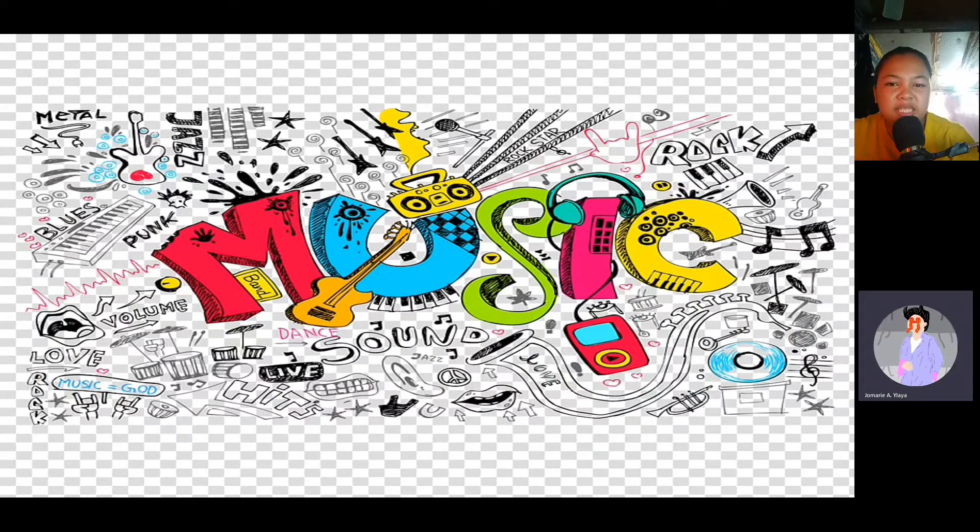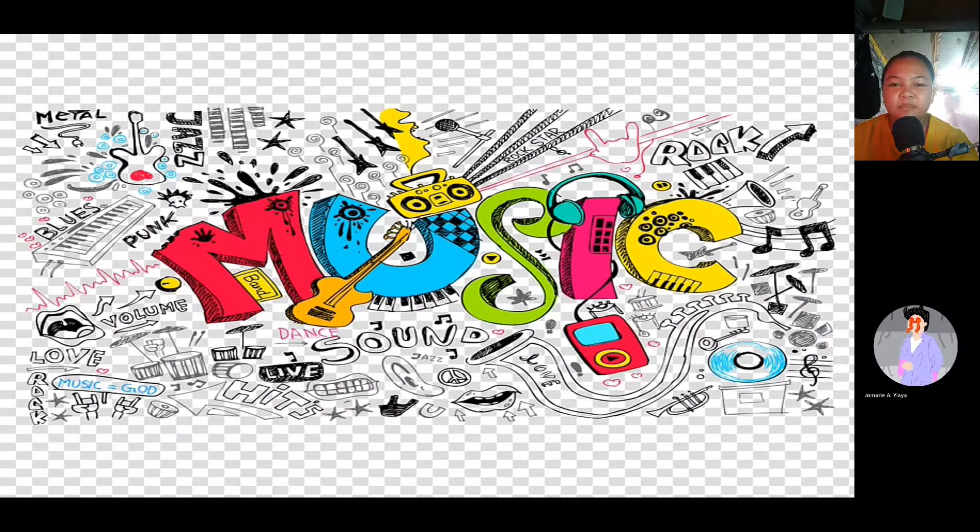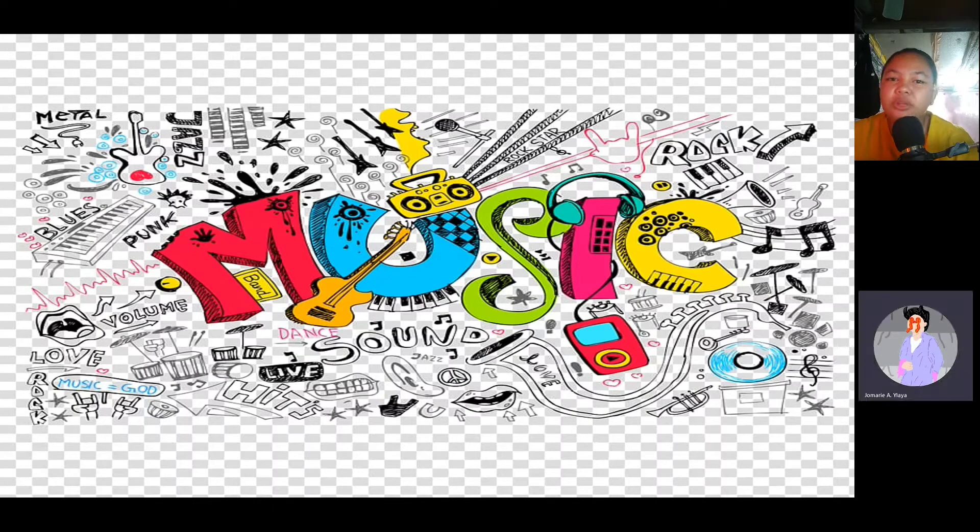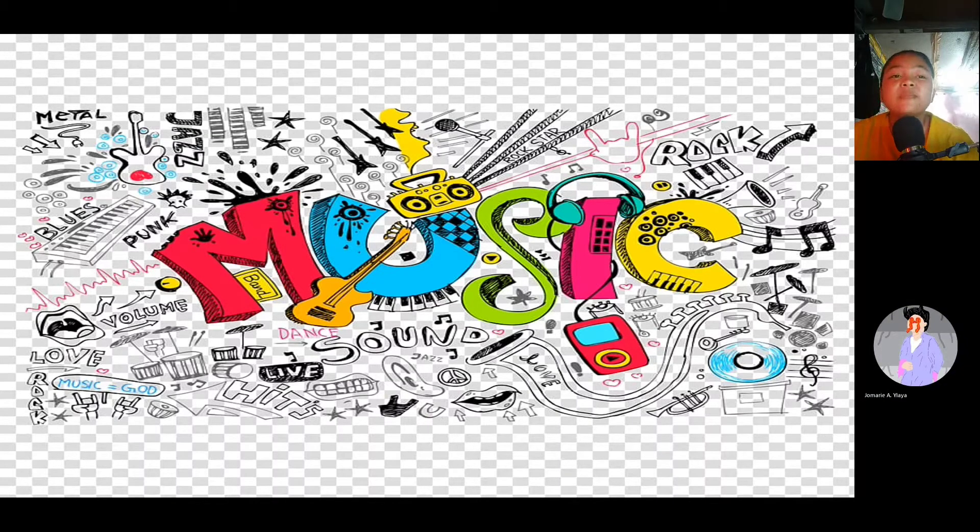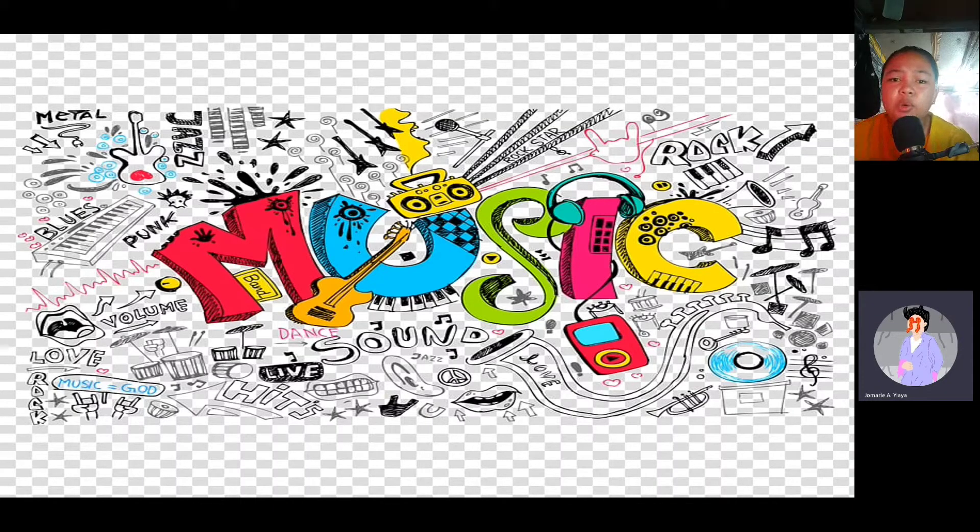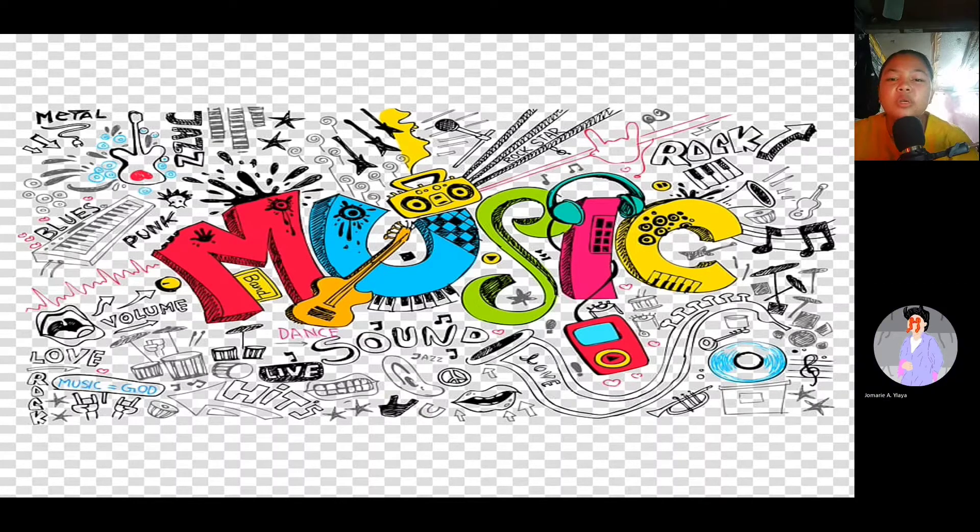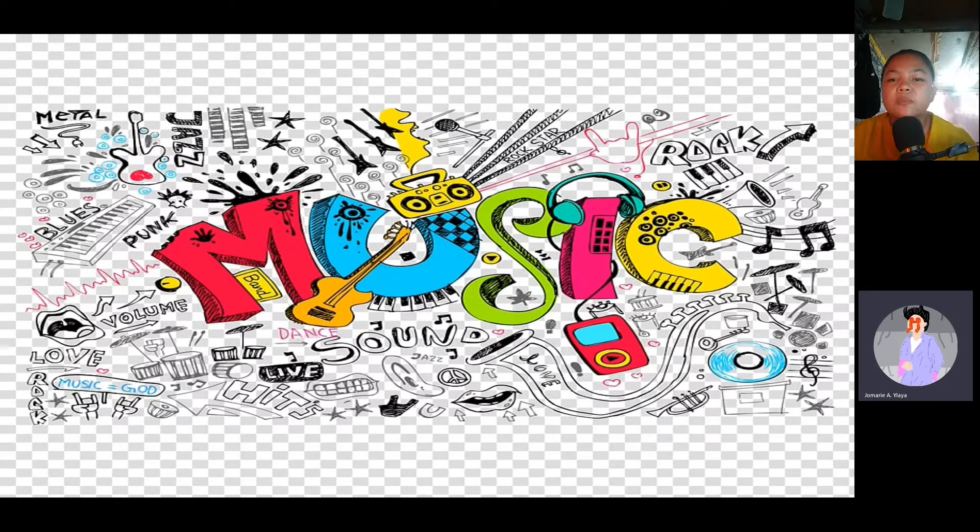Now, what do you see in my screen? Very good. Music. A word? Music. Okay. So, what are inside of the music? We have the types of music. Very good. Who said that? Joshua. Oh. So, what are those? Yes. We have jazz, metal, rock. Yes. That's good. Very good, class.